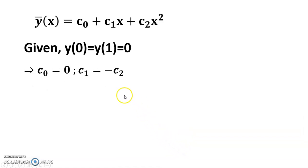By putting in here zero, I get y(0) is equal to zero, so c zero is equal to zero. And y(1): c one plus c two is equal to zero, so c one equals to minus c two.